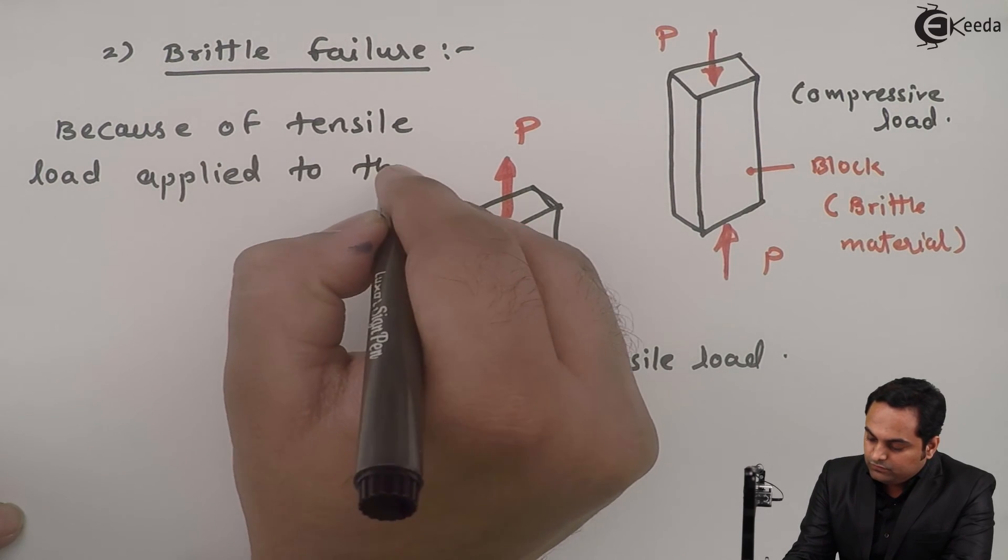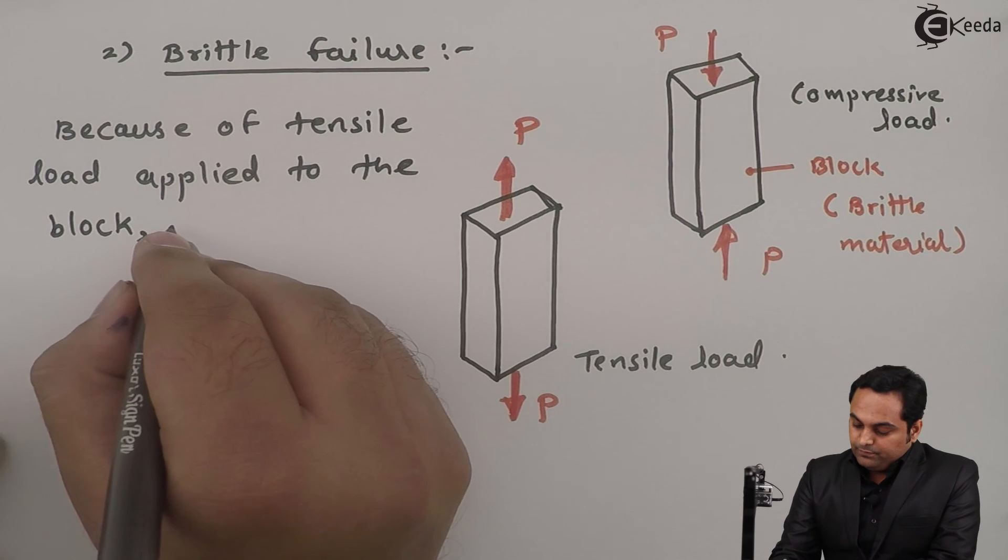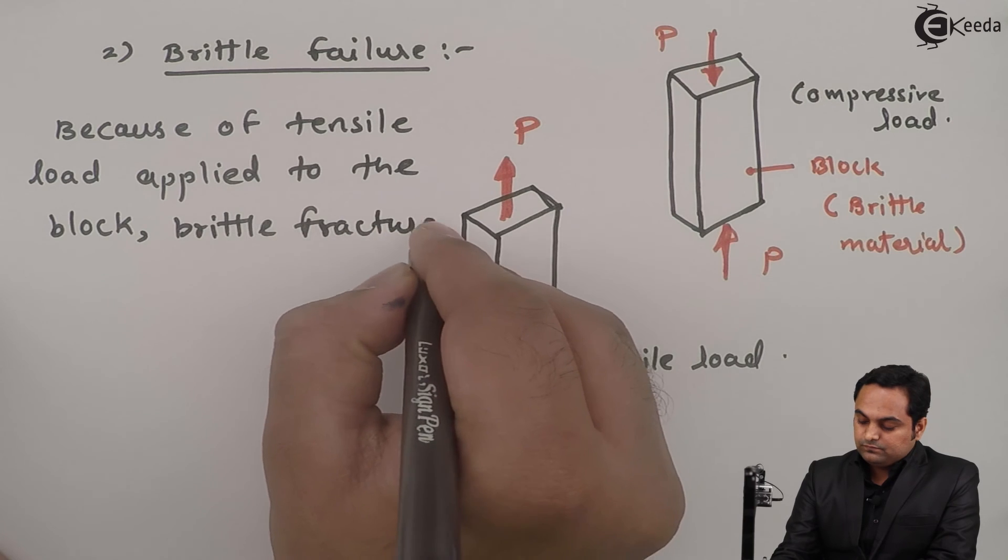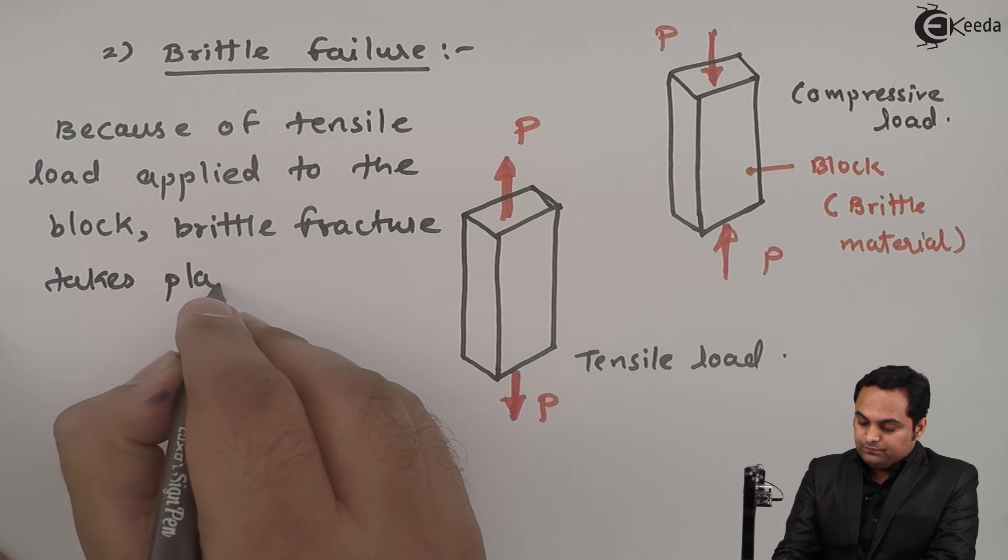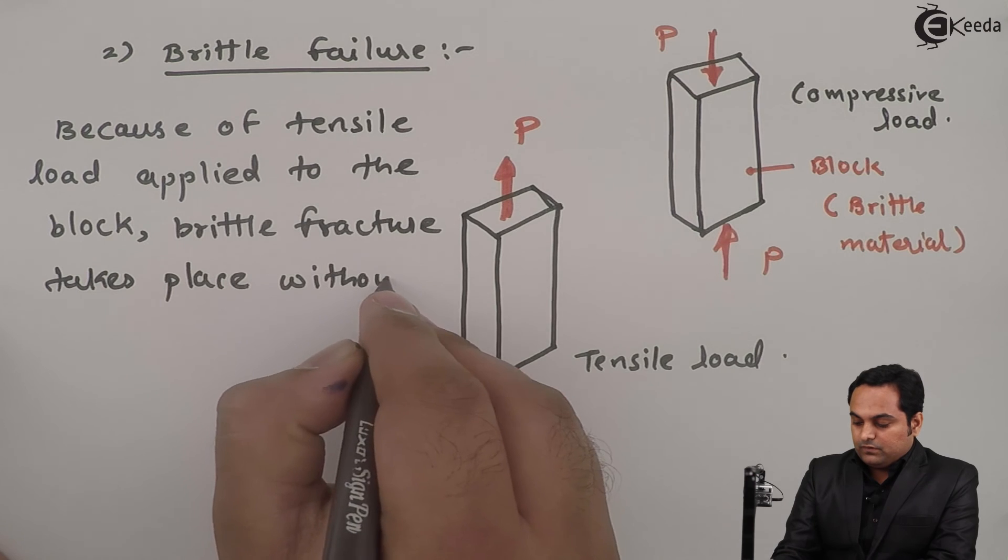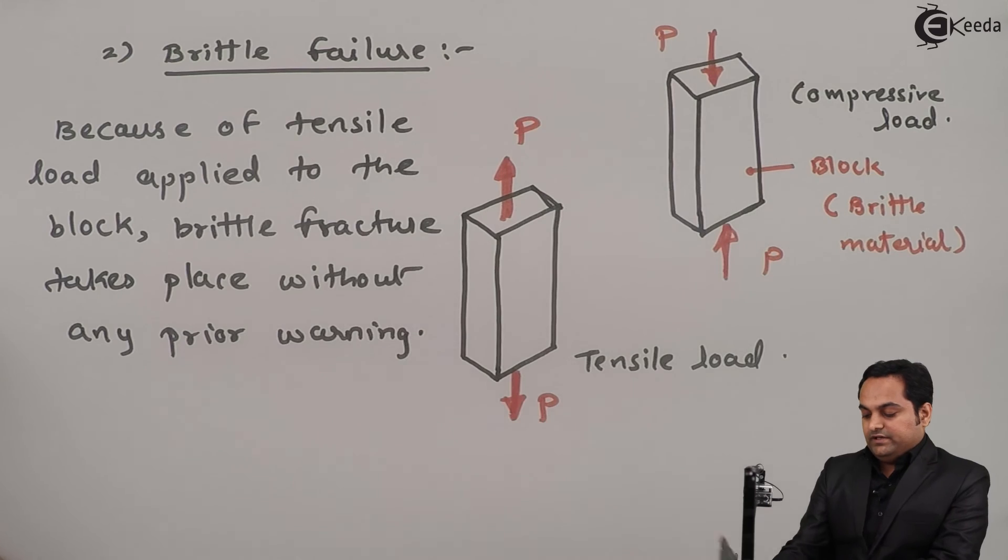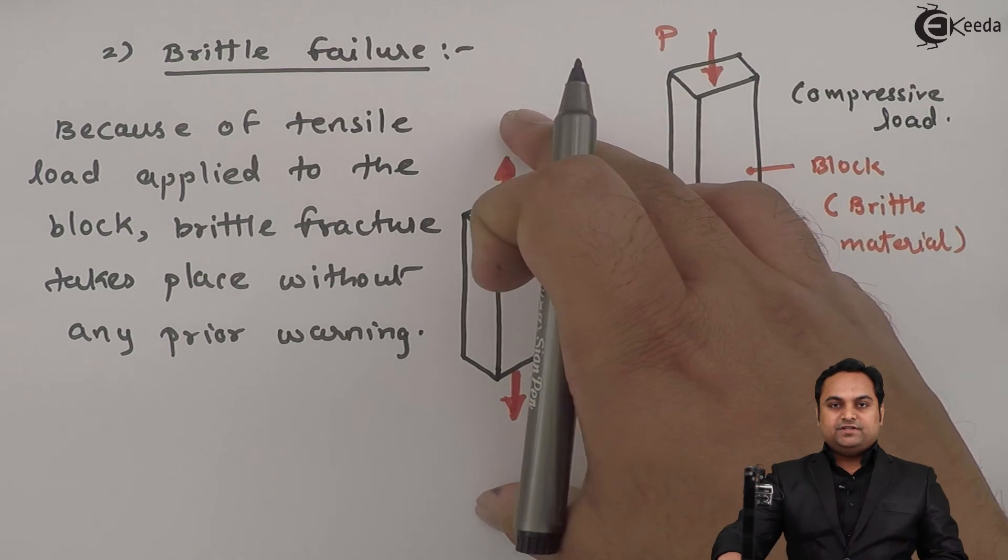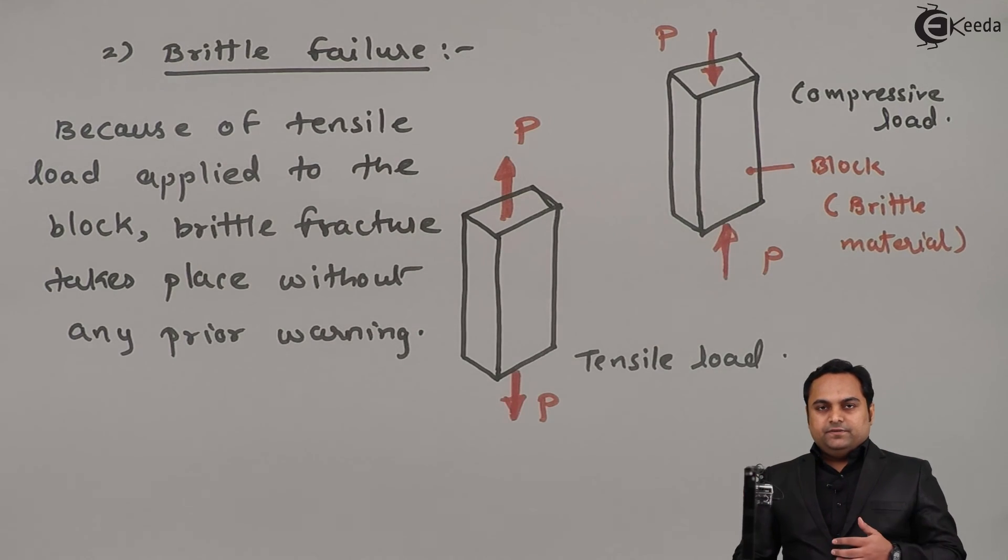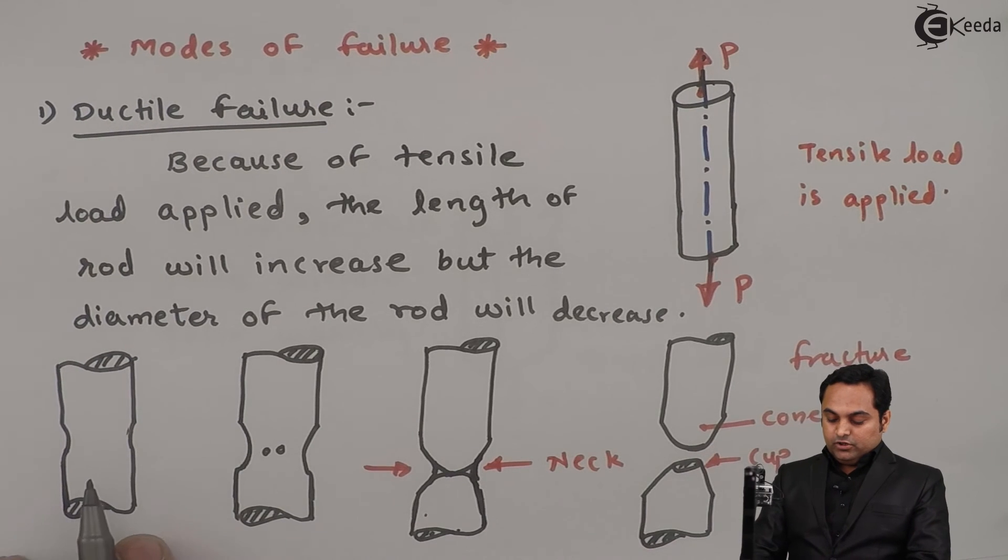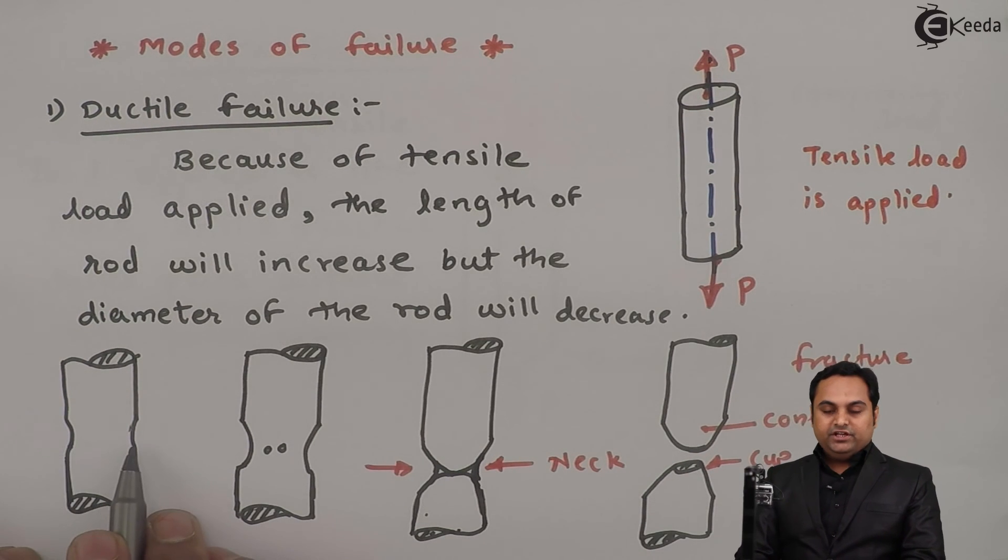Applied to the block, brittle fracture takes place without any prior warning. When the tensile load is applied, there is direct brittle fracture without any prior warning. If we see previously when there was ductile failure, we could see the change in shape, the change in dimensions was visible and finally the object was broken.